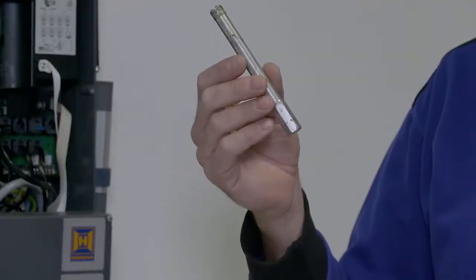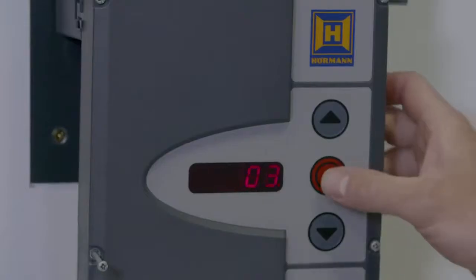If the door has an emergency winding handle or pin drive, remove from the back of the motor. Press stop on the control panel to clear the error code.